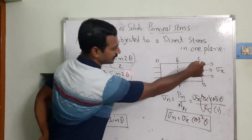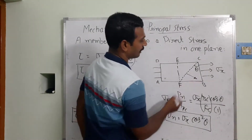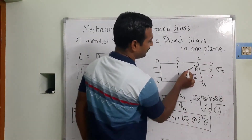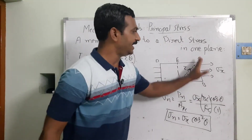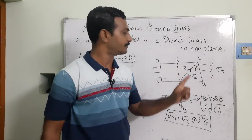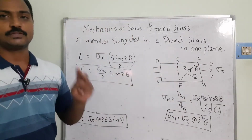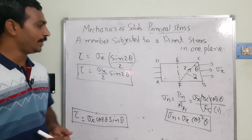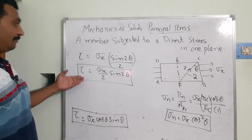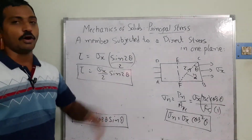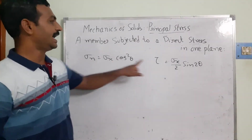So the FC plane carries two types of forces: a normal component and a tangential component. In contrast, the BC plane carries only normal stresses. When it comes to FC, it carries both normal and tangential forces. We now need to find the maximum value of Sigma N and the maximum value of shear stress acting on face FC.